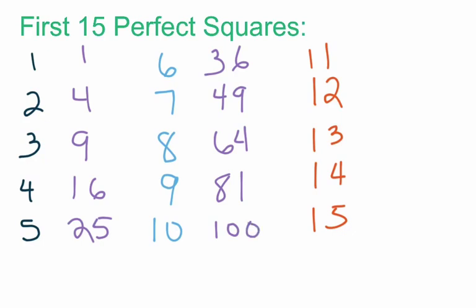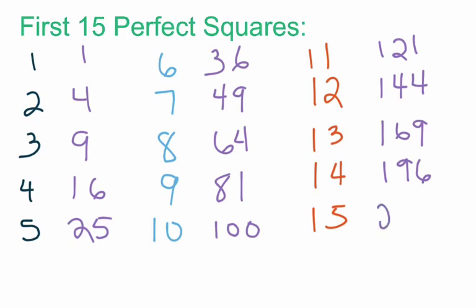All I'm doing is taking the numbers written in black, blue, and red and squaring them — multiplying the number by itself. For the red column: 11 squared gives me 121. 12 squared gives me 144. 13 squared is 169. 14 squared is 196. And 15 squared is 225. In order to be successful with this lesson, I'm going to ask you to memorize those first 15 perfect squares. I'd encourage you to make flashcards with the integer 1 through 15 on one side and the square on the other — so for 7, you'd have 7 on one side and 49 on the other.